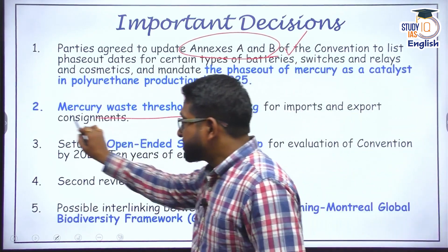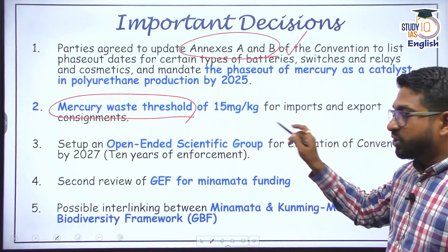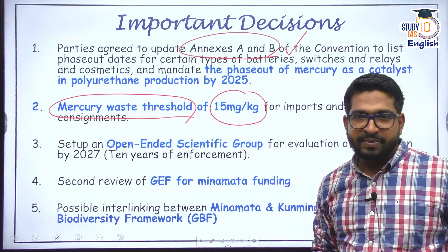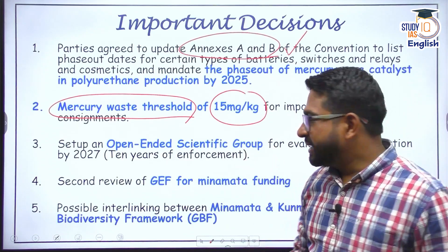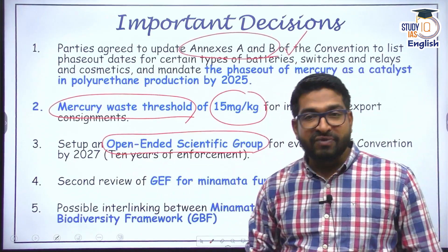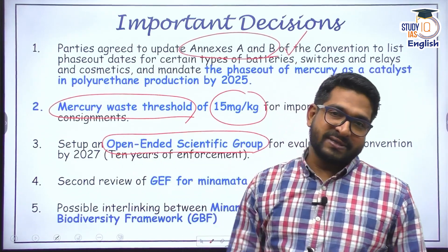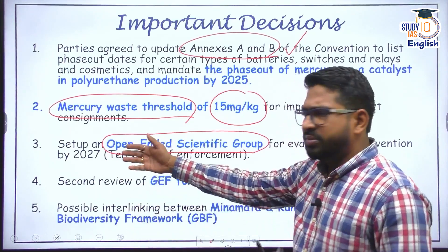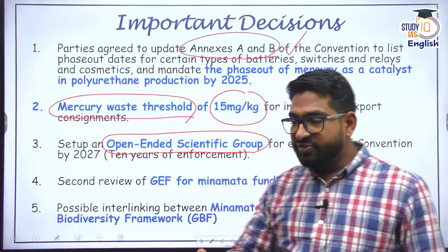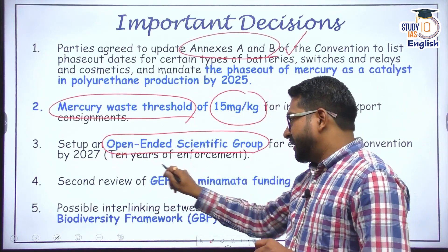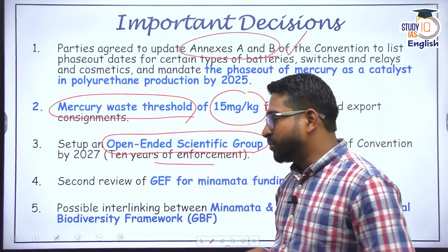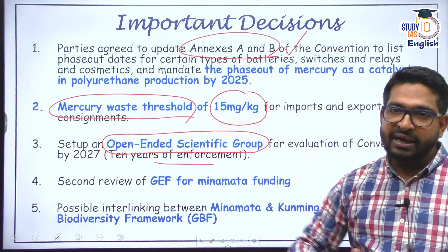From now on, whatever import and export consignments go between the parties, there will be a mercury-based threshold of 15 milligrams per kg. Apart from that, the parties have decided to create an open-ended scientific group to study the impact of the convention and suggest improvements. The next COP will be in 2025, and from now on it will happen biannually — 2025, then 2027. This scientific group will review 10 years of enforcement of the Minamata Convention.